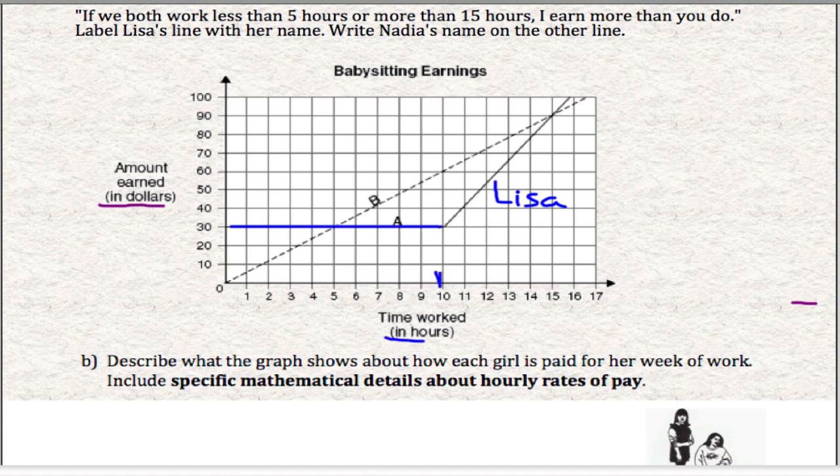So up to 10 hours, Lisa makes $30. So it doesn't really matter. This is kind of an odd way to charge for babysitting. But I guess Lisa tells the family that if you need me for one hour or four hours or eight hours in that week, I'll just charge you $30 no matter what.